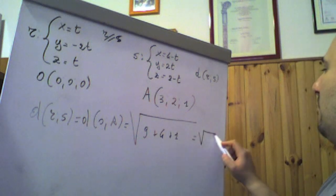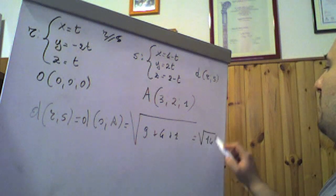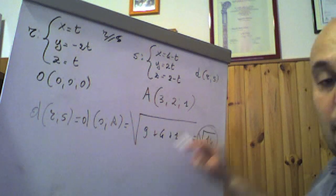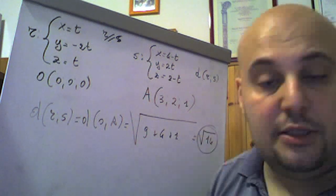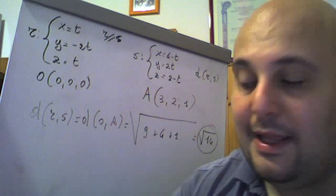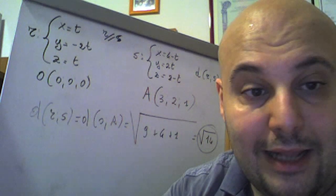Il punto A, proiezione ortogonale di O su S, ha coordinate: x = 4 meno 1 = 3, y = 2·1 = 2, z = 2 meno 1 = 1. Quindi A = (3, 2, 1). La distanza della retta R dalla retta S coincide con la distanza di O da A: radice quadrata di 3² + 2² + 1² = radice di 9 + 4 + 1 = radice di 14.